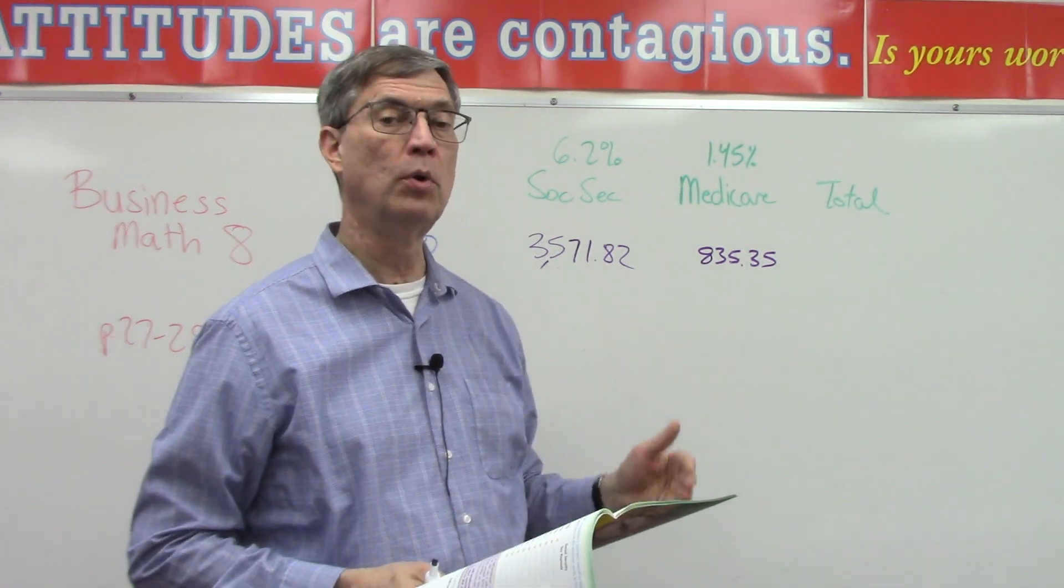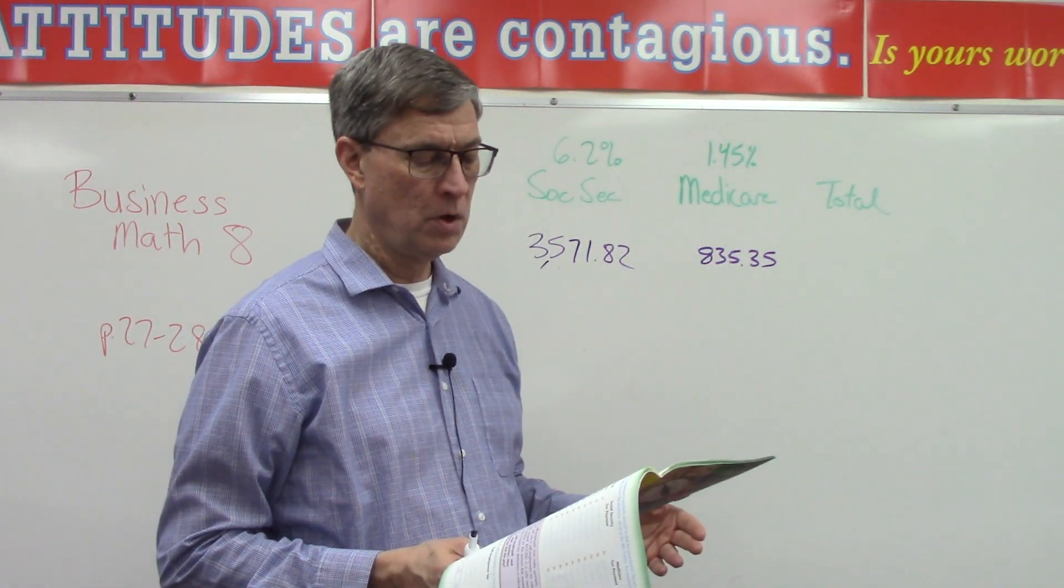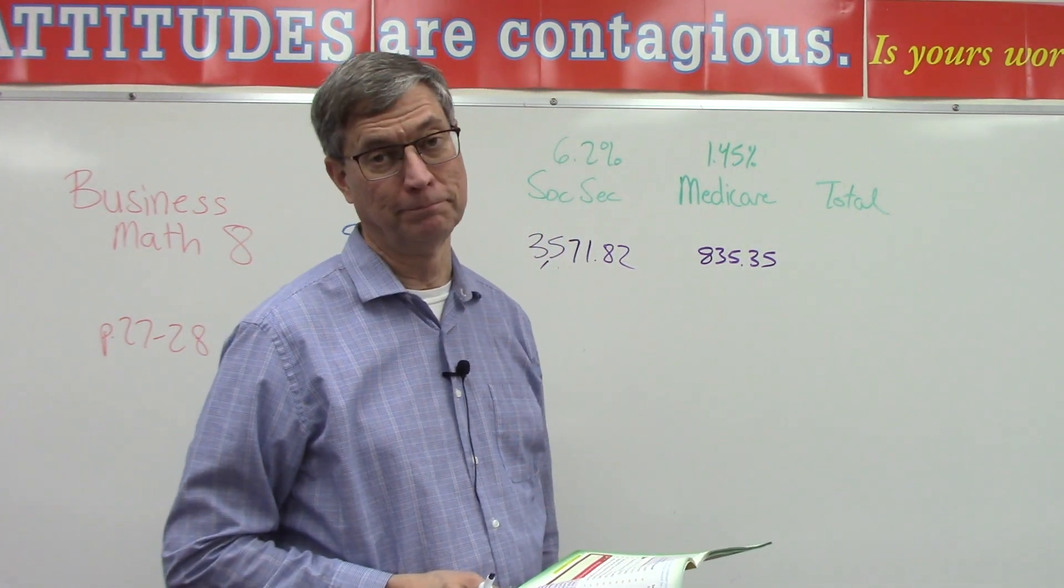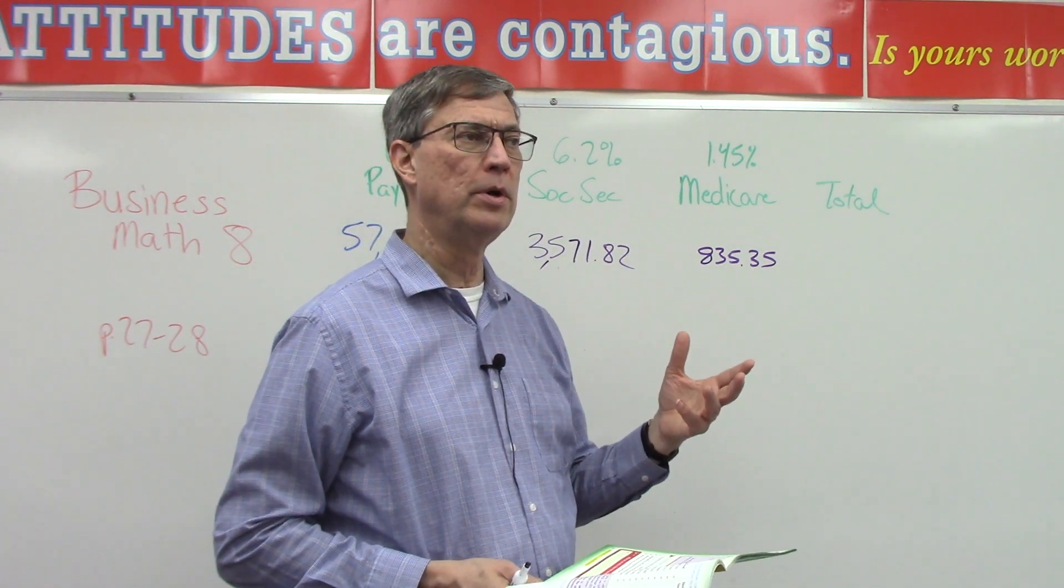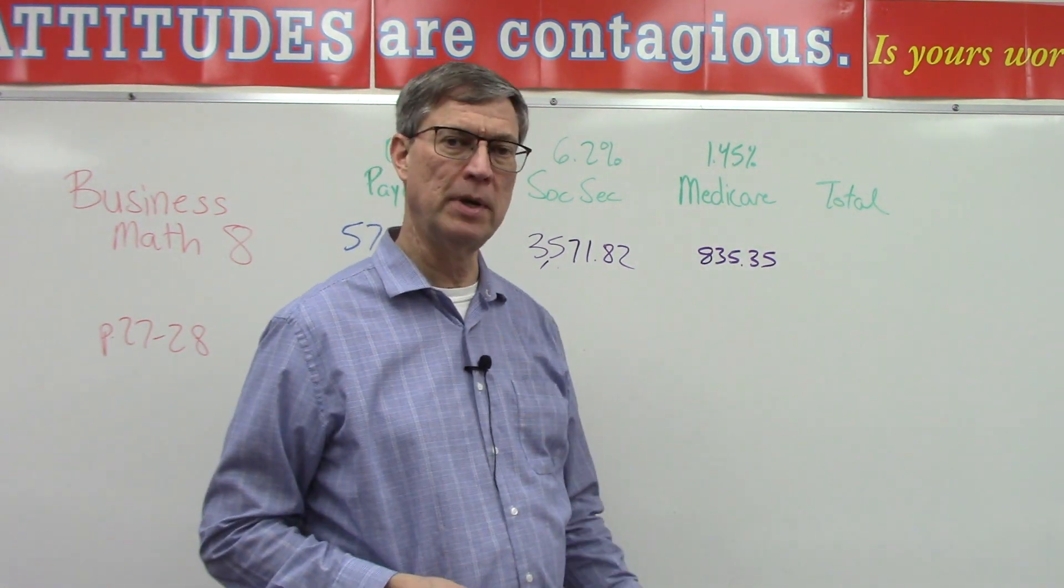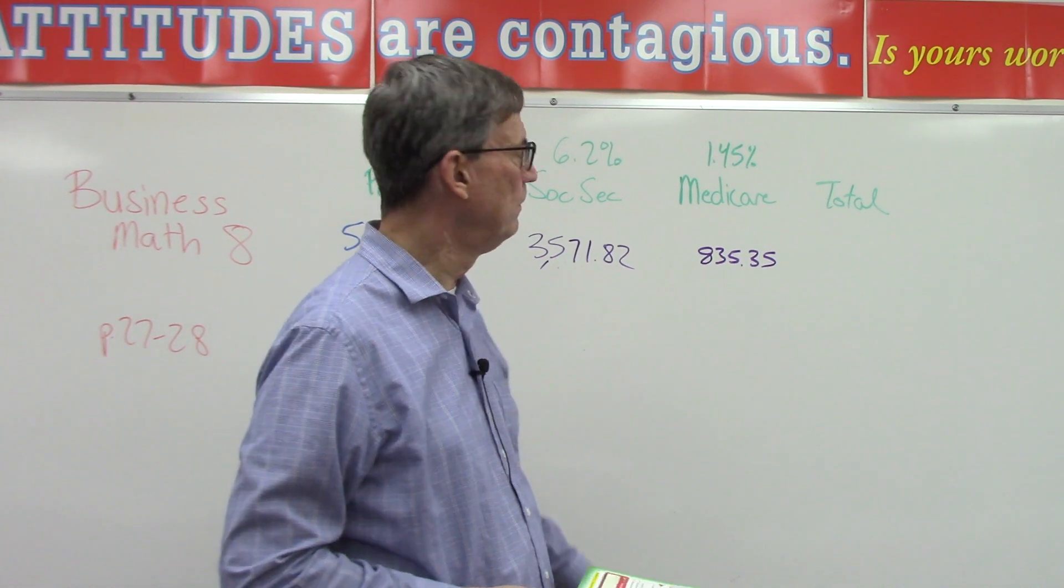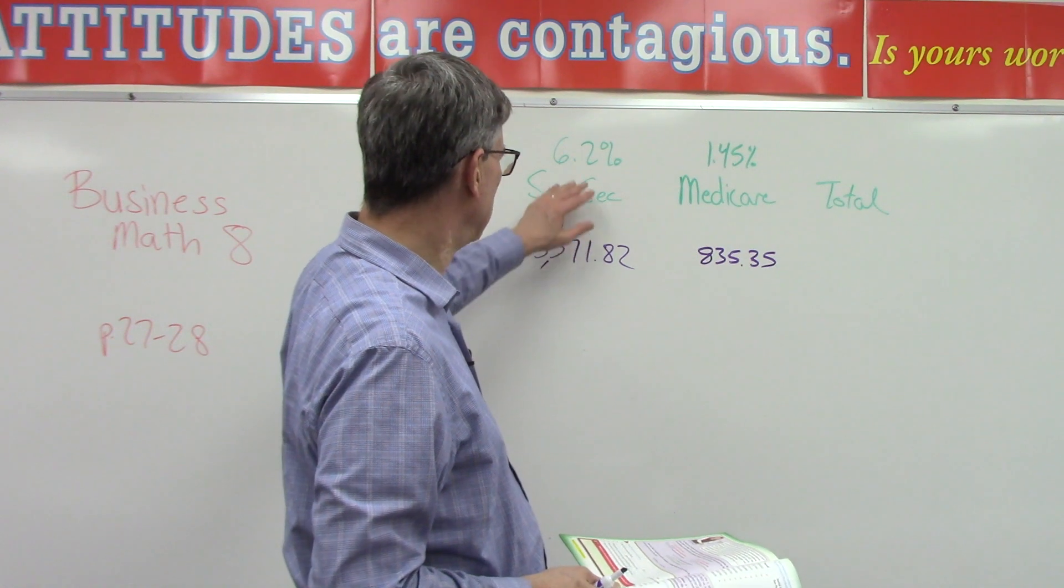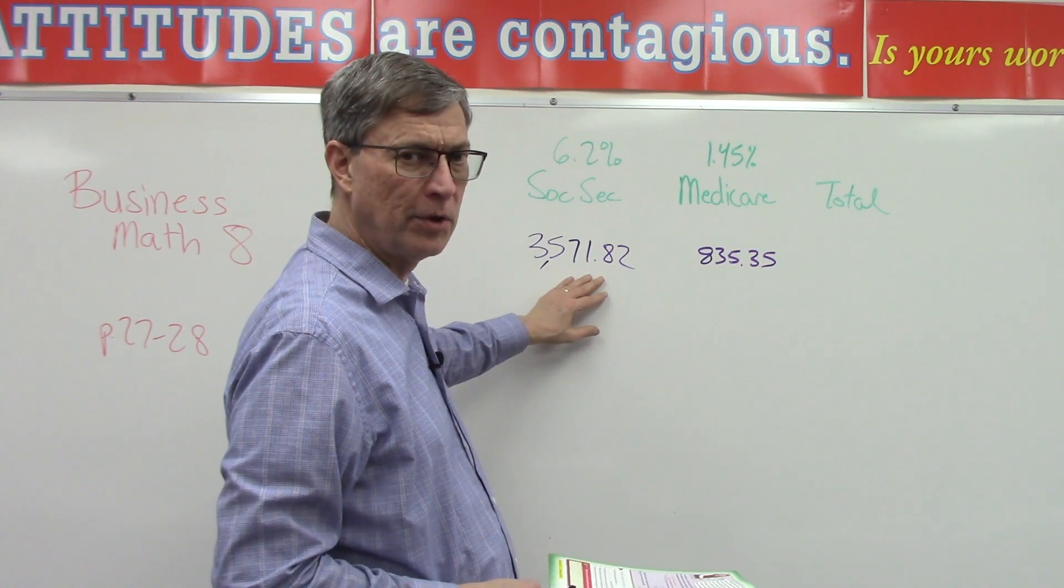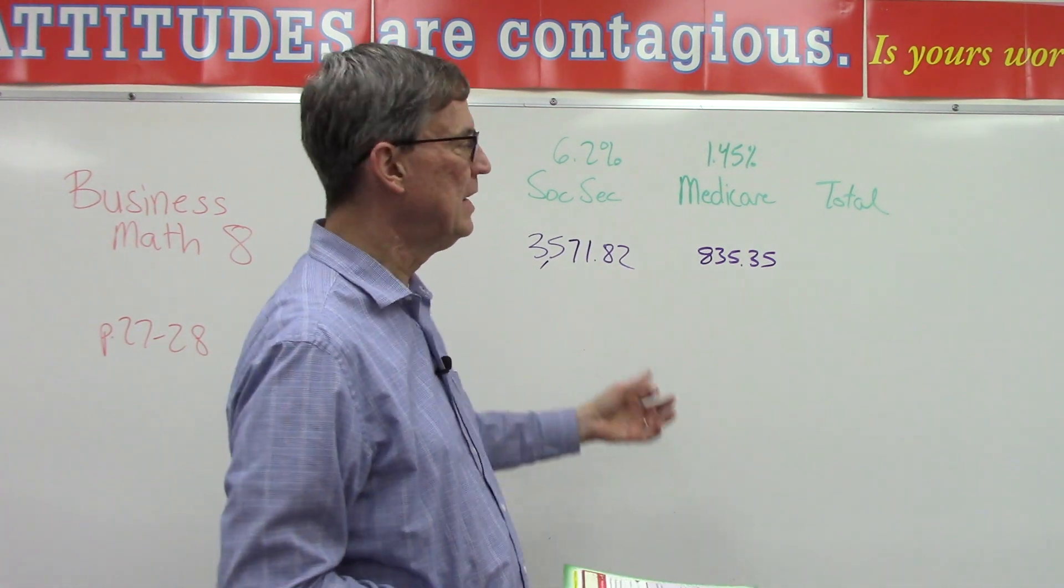We have to take the total of adding these two together and double it. So what happens is the employer has to withhold from his employees this amount, put it in a savings account, so to speak, every two weeks or every month, however often he pays his payroll—actually, this is quarterly. But every time he does a payroll, he has to put that money aside. He gets to the end of the quarter, and this is how much should be in there from his employees. And then he has to match it with the same amount.